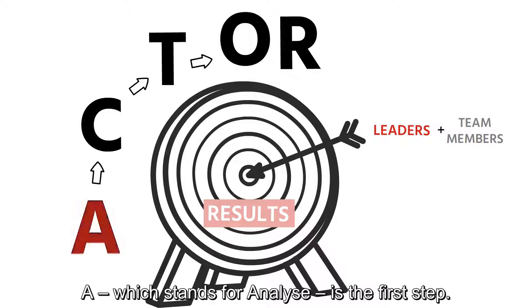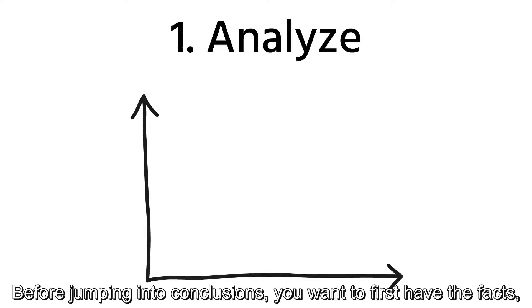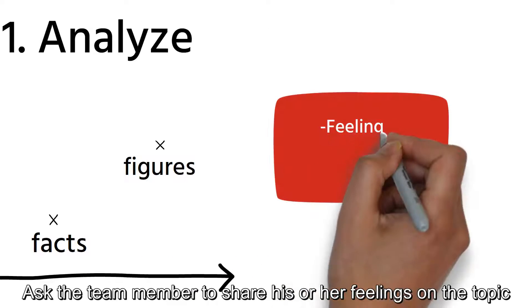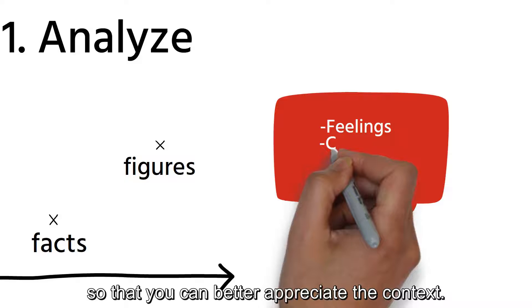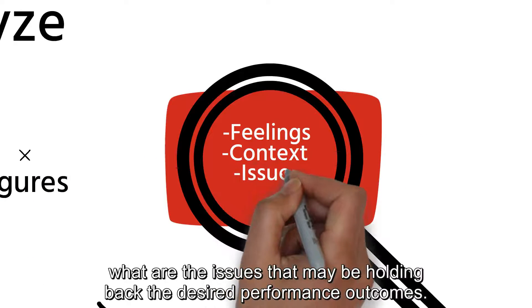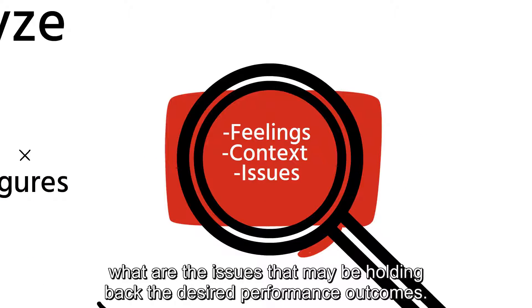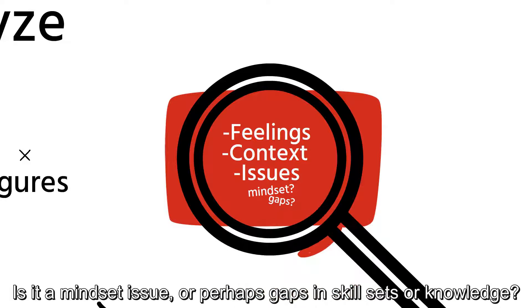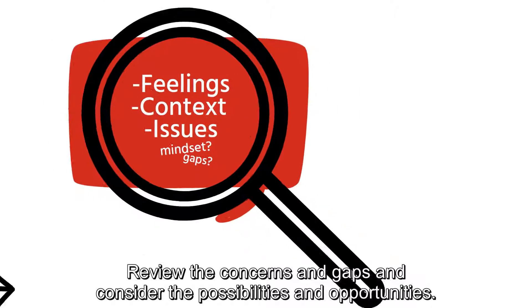A, which stands for analyze, is the first step. Before jumping into conclusions, you want to first have the facts, figures, and reference points. Ask the team member to share their feelings on the topic so that you can better appreciate the context. Analyze the situation and try to assess what are the issues that may be holding back the desired performance outcomes. Is it a mindset issue or perhaps gaps in skill sets or knowledge? Review the concerns and gaps and consider the possibilities and opportunities.